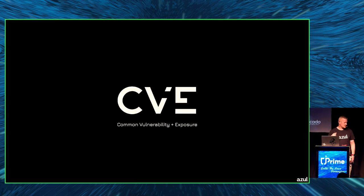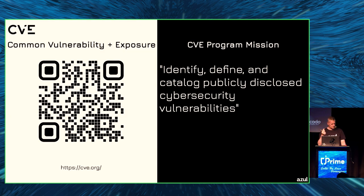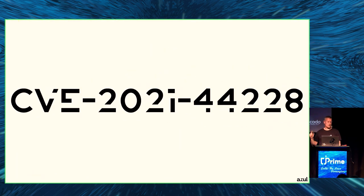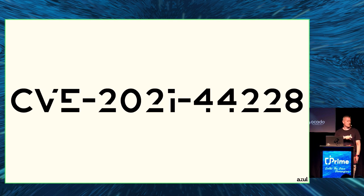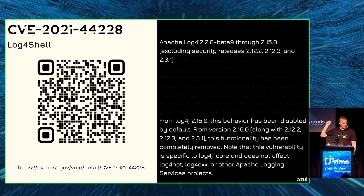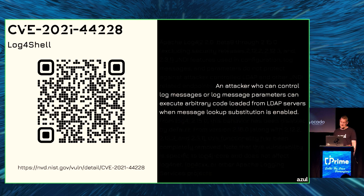Then there is CVE — Common Vulnerability and Exposure — which is the most well-known. The CVE program identifies, defines, and catalogs publicly disclosed cybersecurity vulnerabilities. For Log4Shell, the CVE code was CVE-2021-44228. With this number you can identify a specific vulnerability. The CVE entry contains the affected and non-vulnerable versions of the library, and text explaining exactly what the vulnerability is.